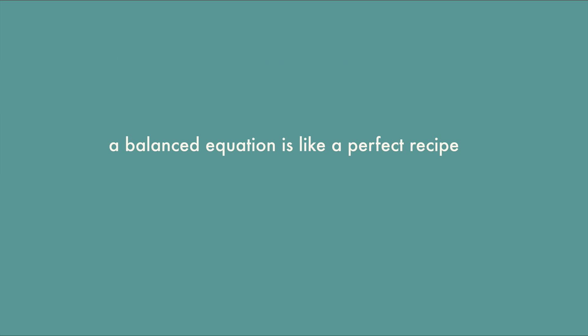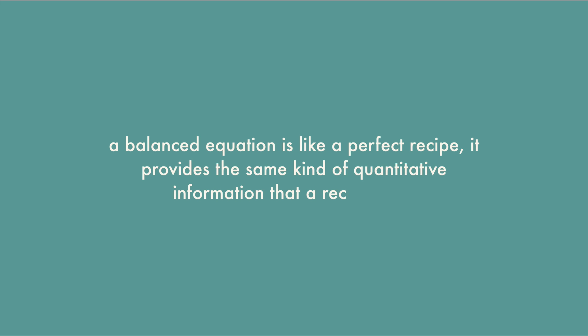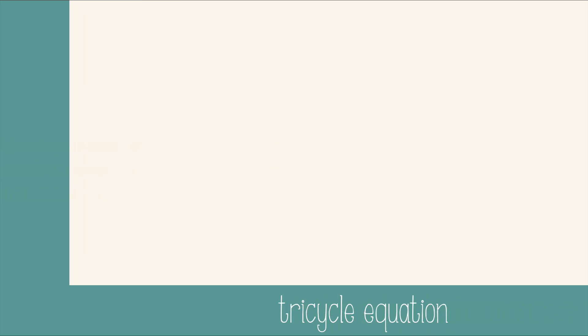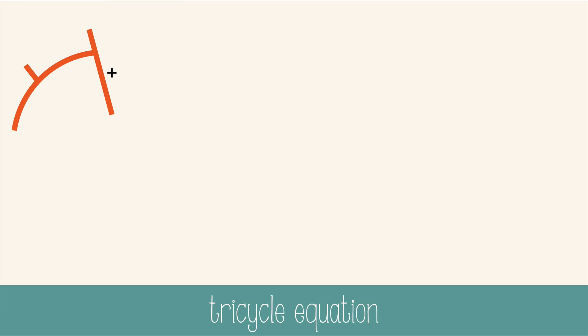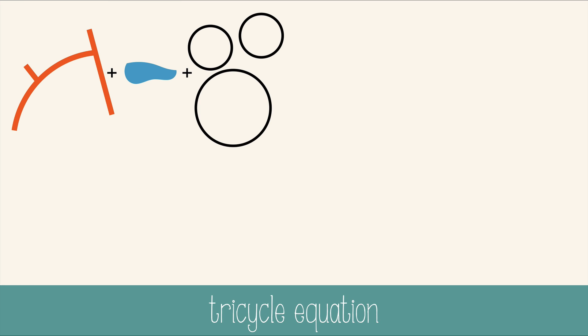A balanced equation is like a perfect recipe — it provides the same kind of quantitative information that a recipe does. Let's think of it in another way. To build a tricycle we need a frame, a seat, wheels, and pedals.